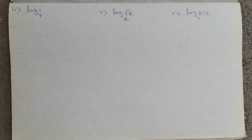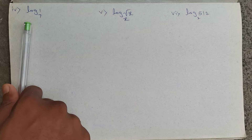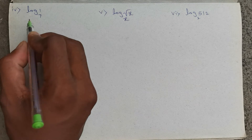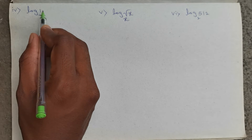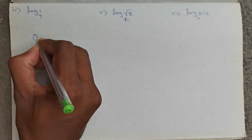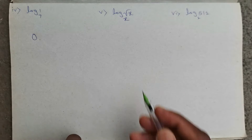Next, fourth question. Value of log 1 base 7. Always log 1 with any base is 0. So log 1 value is 0.